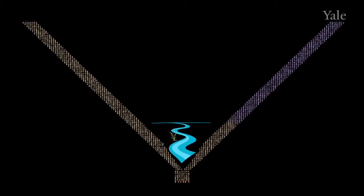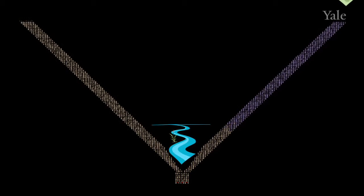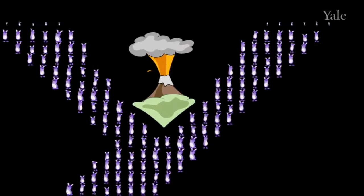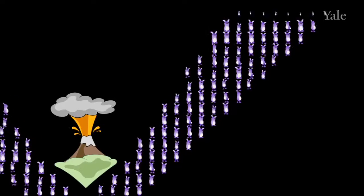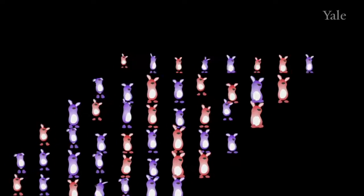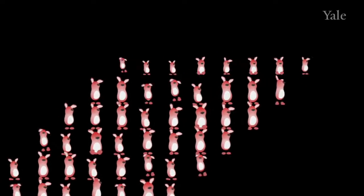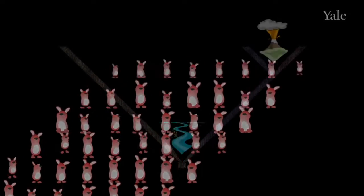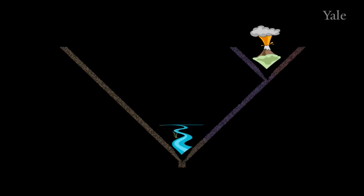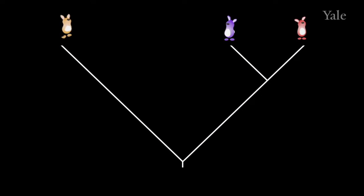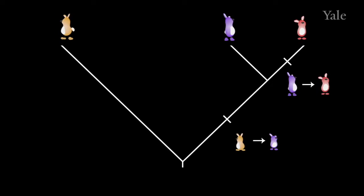Some time later, imagine that this population of purple bunnies is split in two again, in this case by the appearance of a volcano. In one of the now-separated populations, a new mutation results in a red-colored bunny. Red-colored bunnies do well in that environment, and eventually all bunnies on that side of the volcano are colored red. This process of successive splitting generates a branching pattern — a tree — along which we can trace the evolution of new characteristics: in this case, from tan to purple, and later from purple to red.